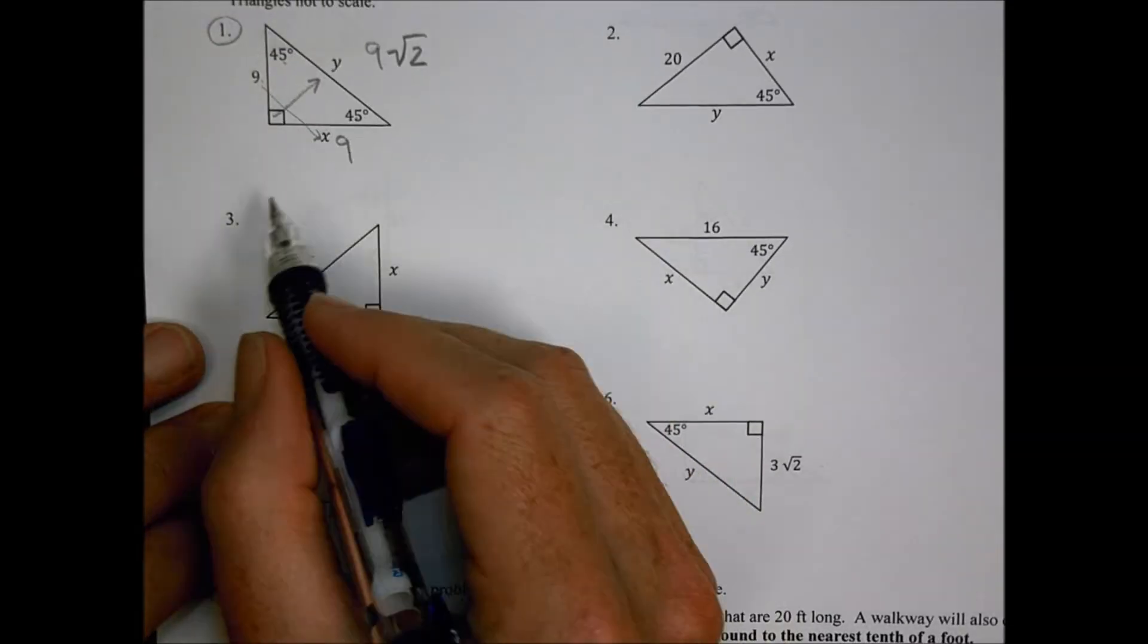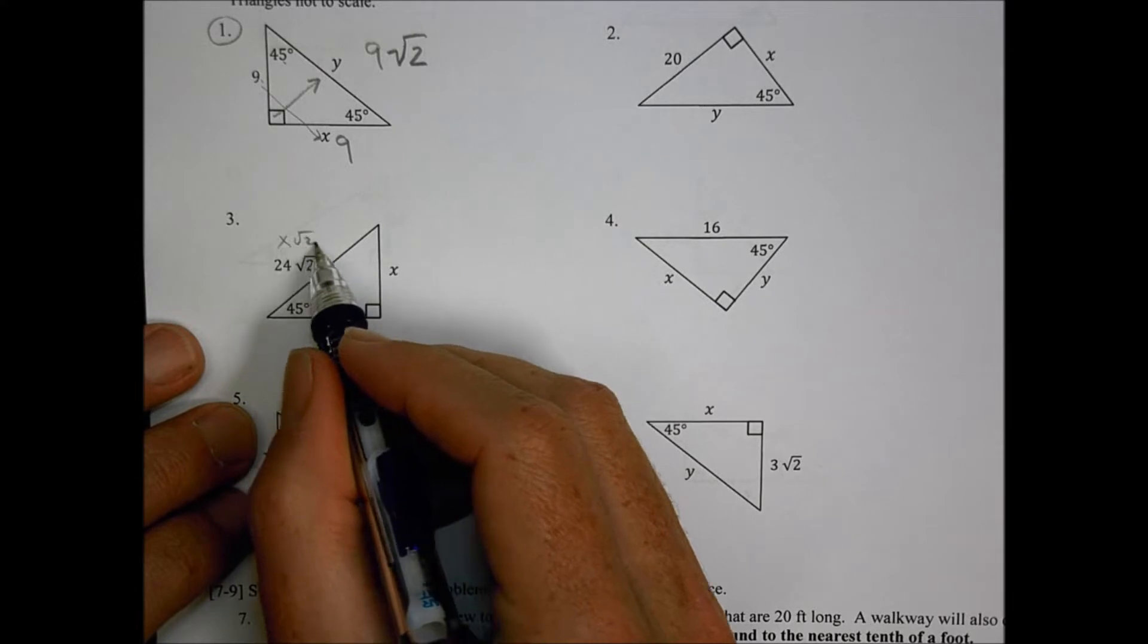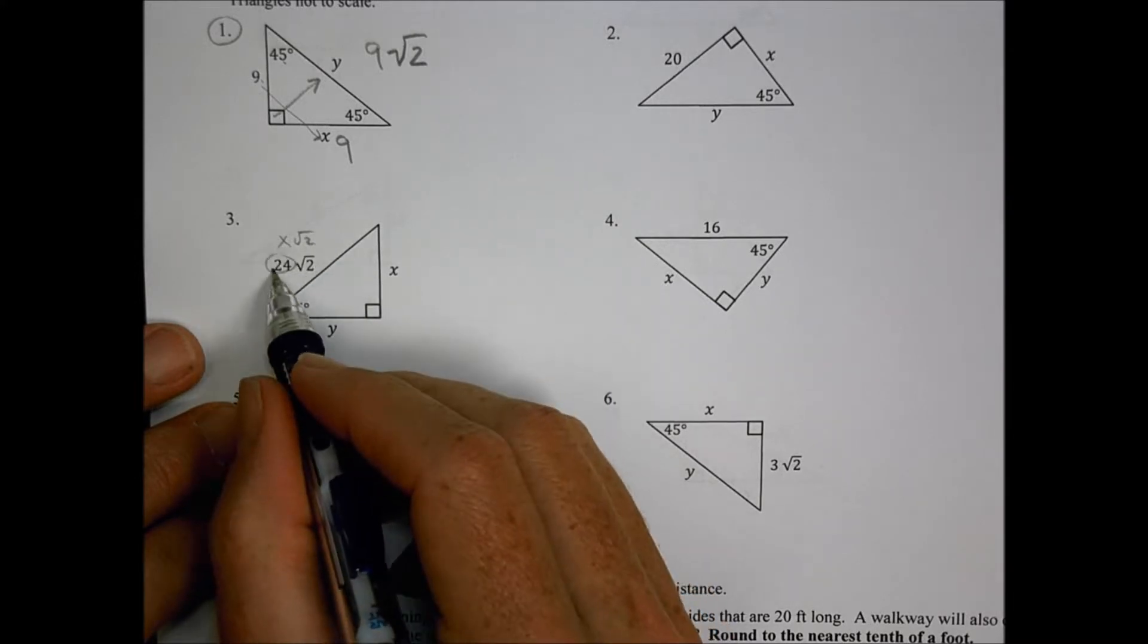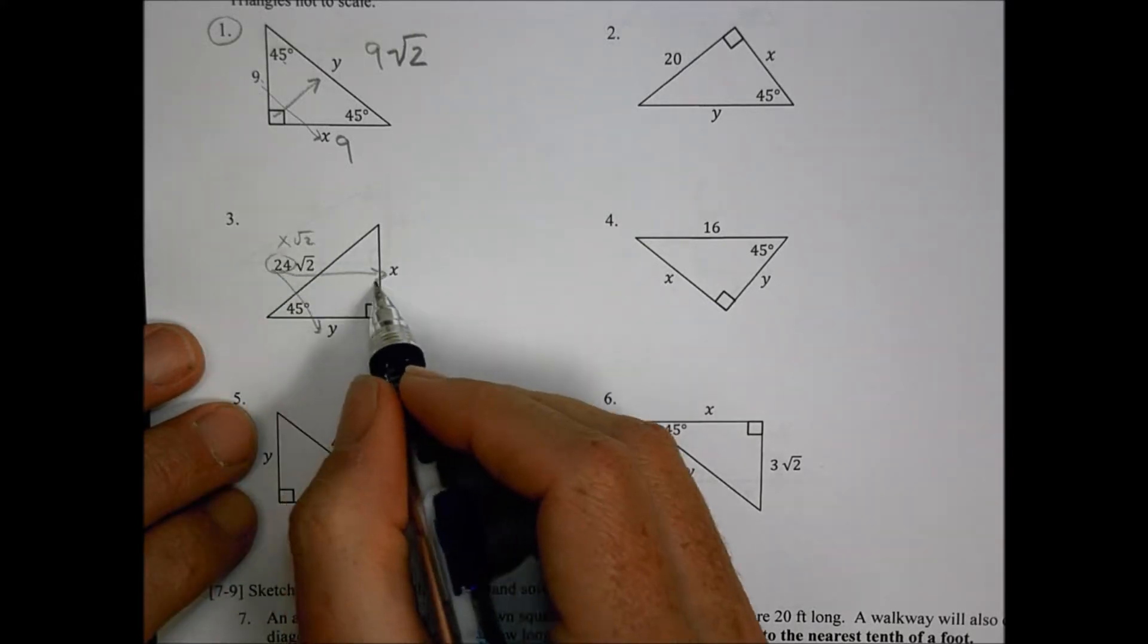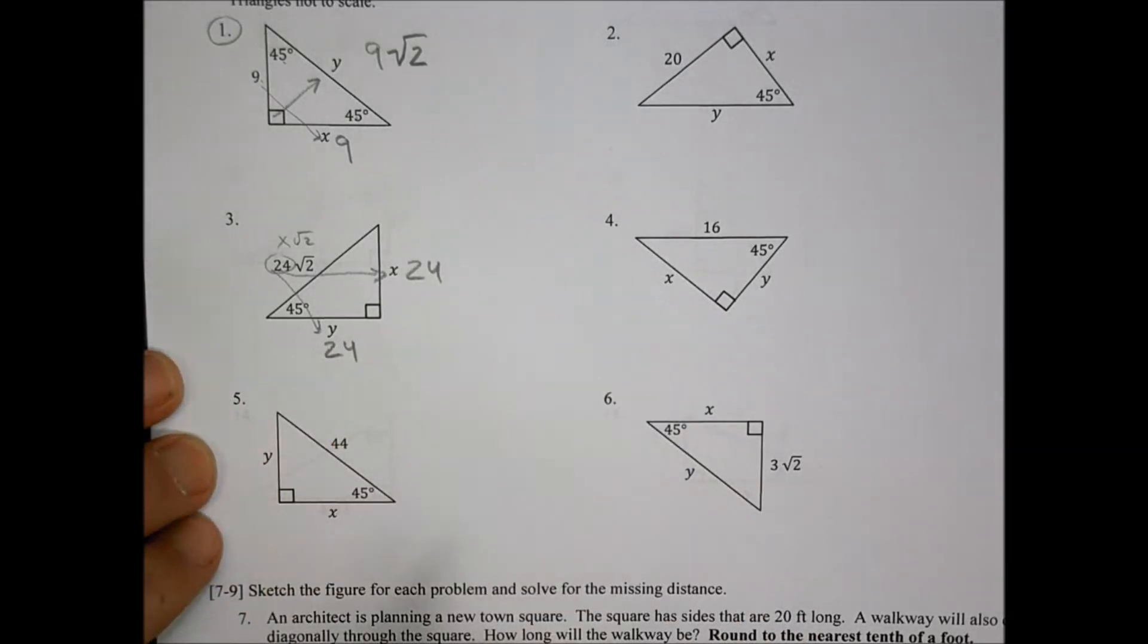For number 3, what we can see is that I already have it in the form of X root 2 there. So that X value is what comes back to here and to here. So X is 24, and this Y is also 24 for number 3.